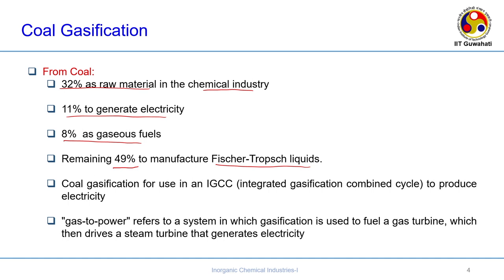The remaining gases can also be used as a coal gasification medium in an IGCC - Integrated Gasification Combined Cycle. This produces both gas and power, which is why the term 'gas to power' is used. It refers to a system where gasification is used to fuel a gas turbine, which then drives a steam turbine that generates electricity. This is a primary application of coal gasification, and many thermal power plants in India generate both gas and power using this approach.